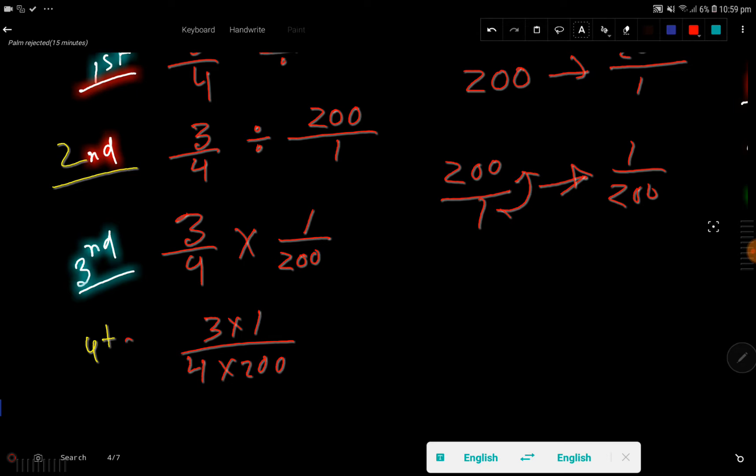So if I 3 times 1, that gives me 3, then 4 times 200, that gives me 800. So this is the answer, right? So thank you for viewing this video. Be well.